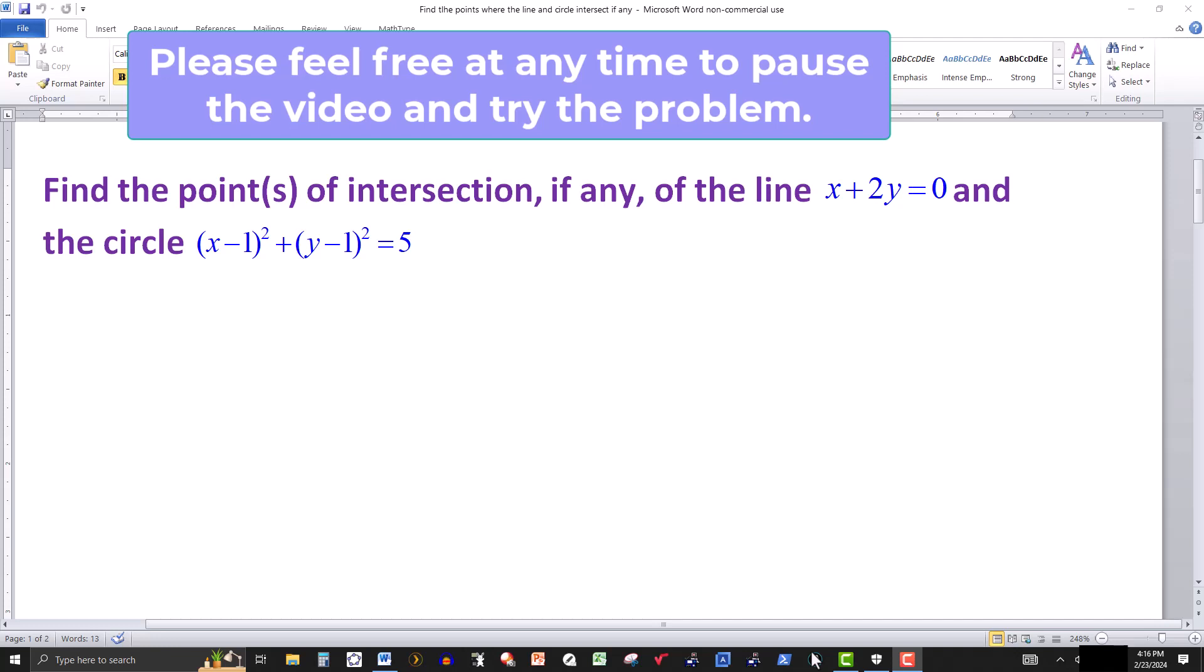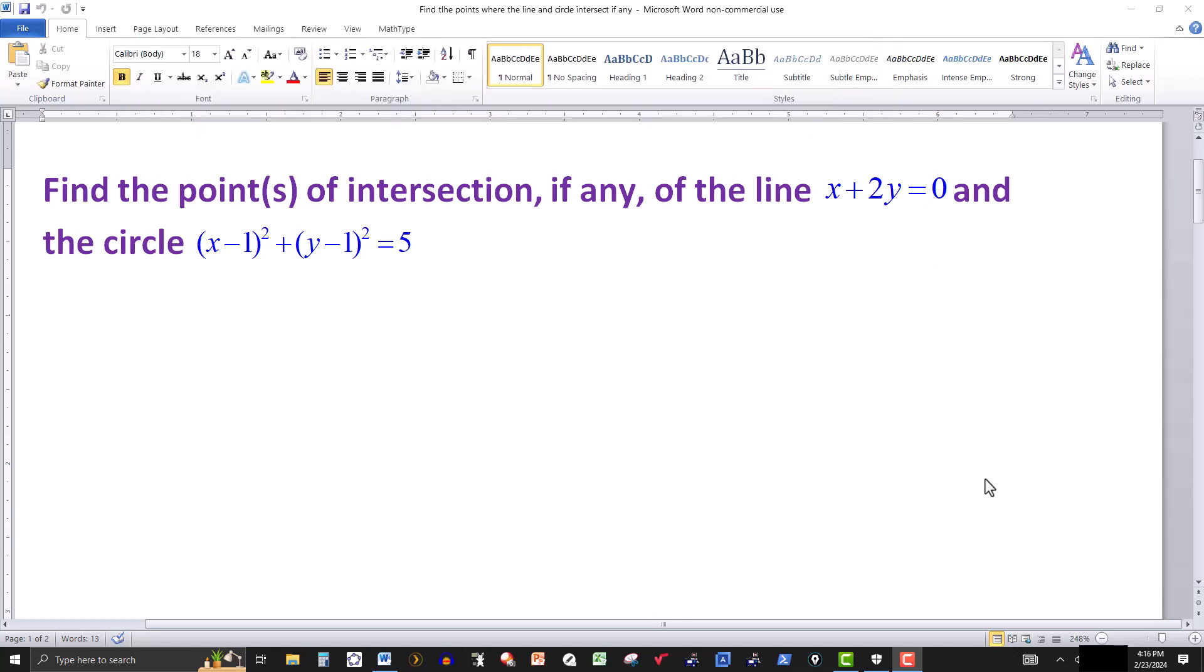In this video we're going to find the points of intersection, if any, of the line x plus 2y equals 0 and the circle (x - 1)² + (y - 1)² = 5.